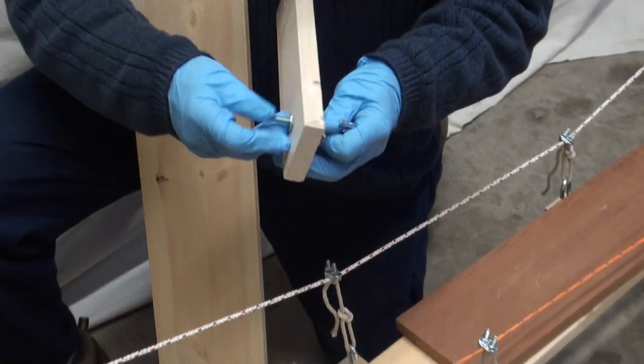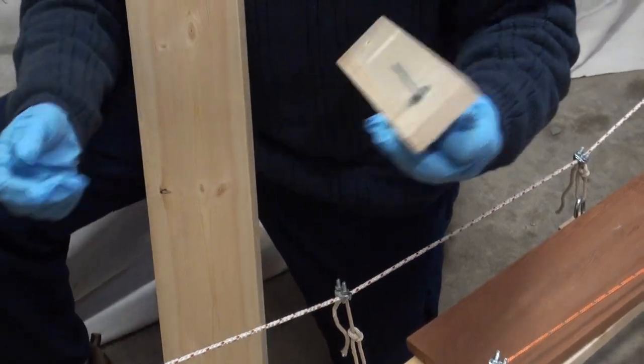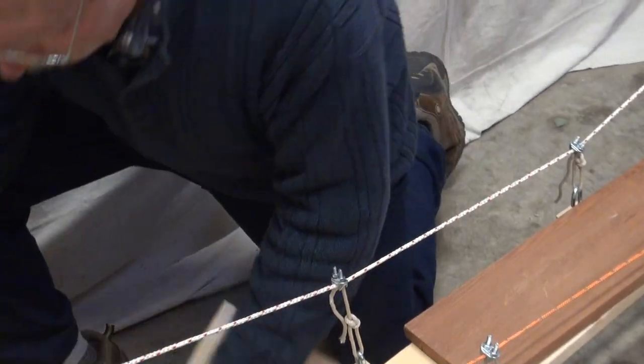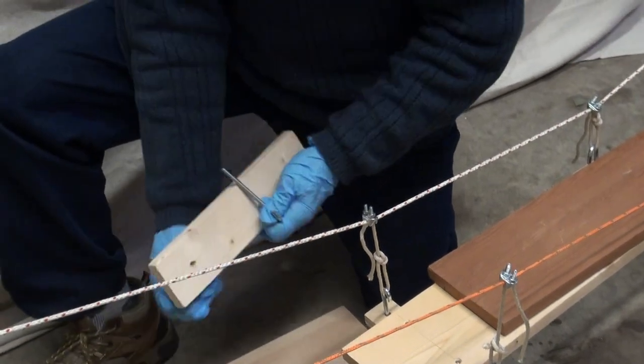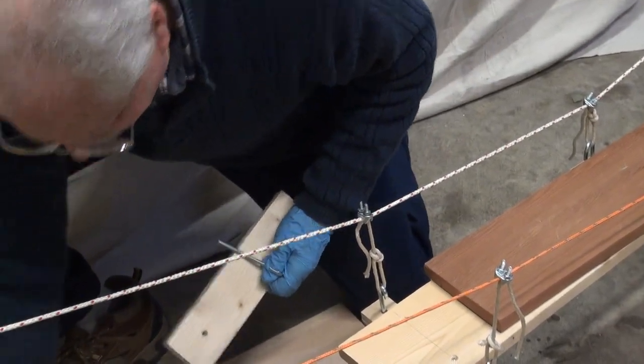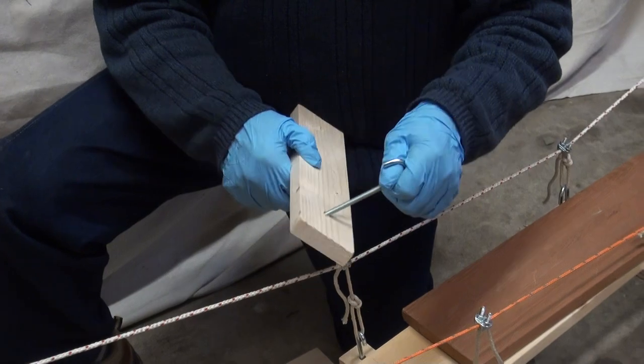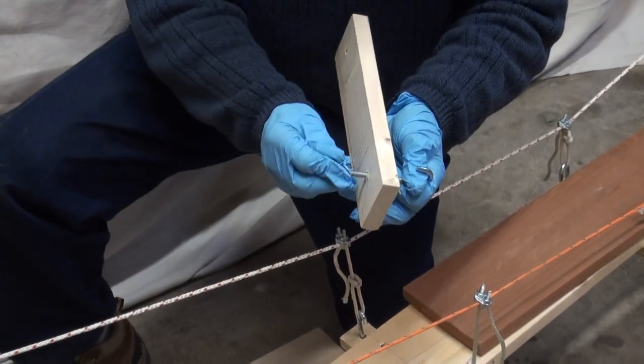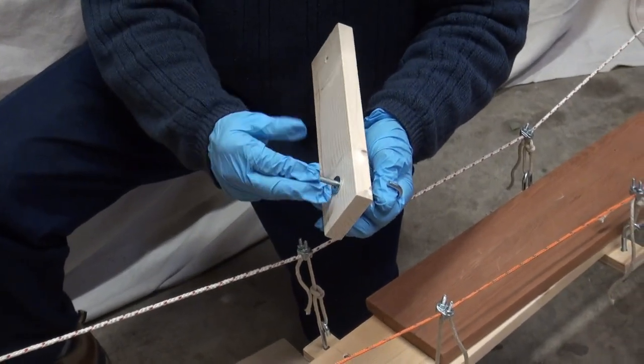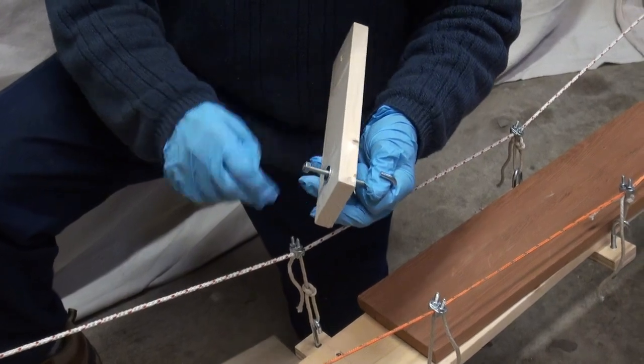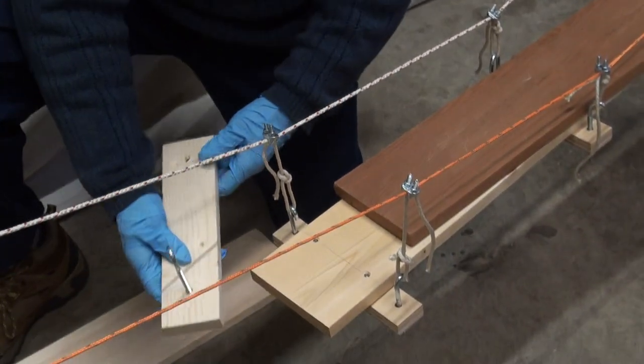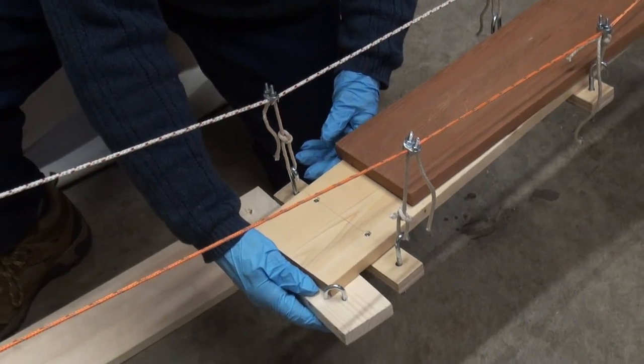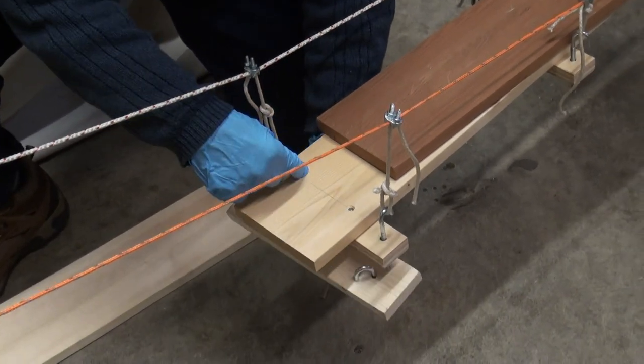J-bolts cost about a buck from the hardware store. J-bolt goes through the hole. A washer and a nut. And they're all set. The cross beams go underneath the deck. And I attach them with just a couple of screws.